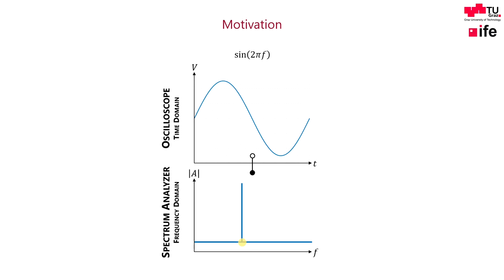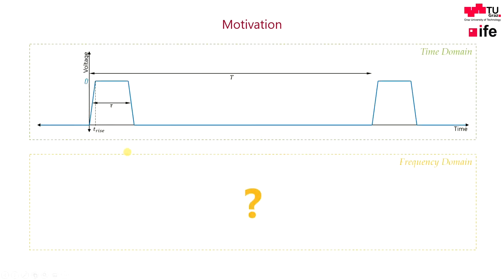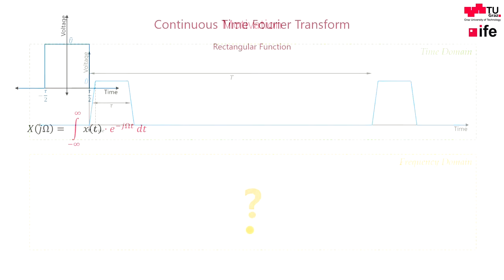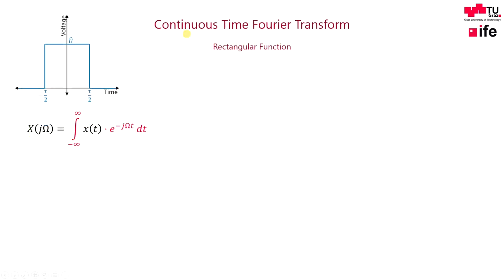But what if the input signal is arbitrary? How does the Fourier transform of a rectangular function look like? Basically, the continuous time Fourier transform is a simple integral which transforms a finite time domain signal into the frequency domain.